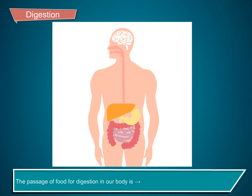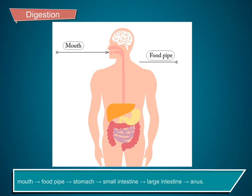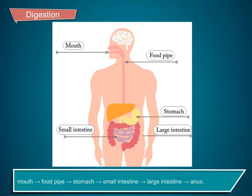The passage of food for digestion in our body is: mouth, food pipe, stomach, small intestine, large intestine, and anus.